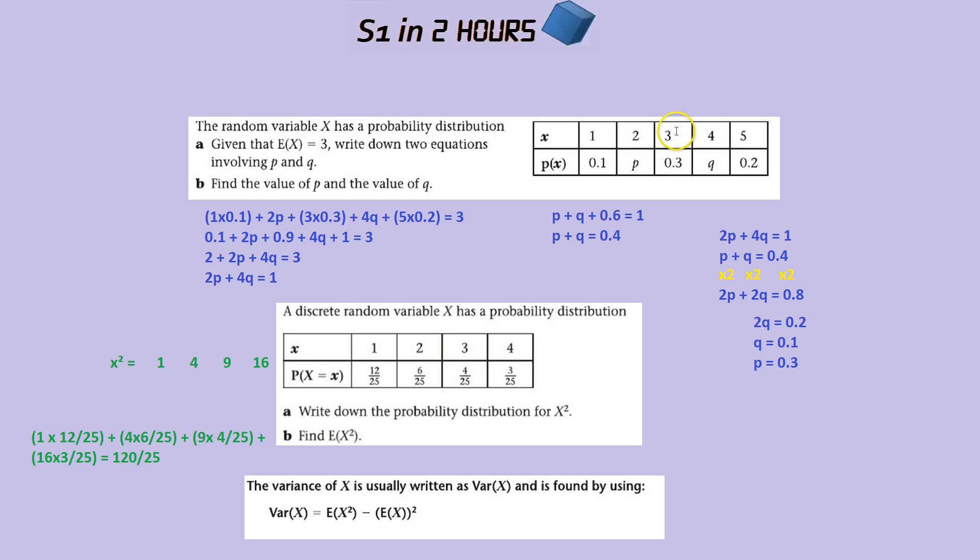Let's do this question: the random variable X has probability distribution, given that the expected value of X (that's E of X) is 3, write down two equations. The first equation - you do 1 times 0.1, 2 times P, etc., and add it up and equal to 3.